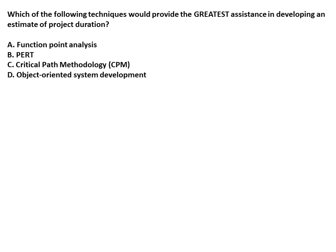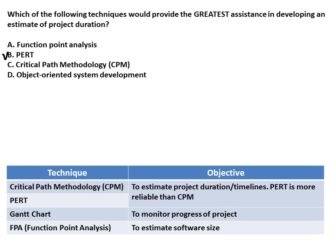Question: Which of the following techniques would provide the greatest assistance in developing an estimate of project duration? Since the objective is to estimate project duration, the answer should be PERT. Recap: CPM and PERT estimate project duration with first preference given to PERT; Gantt chart monitors progress of the project; FPA estimates software size.